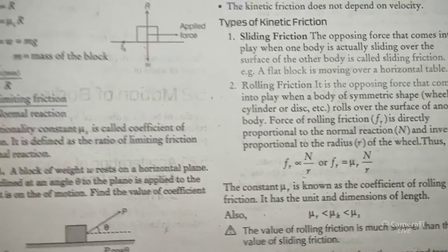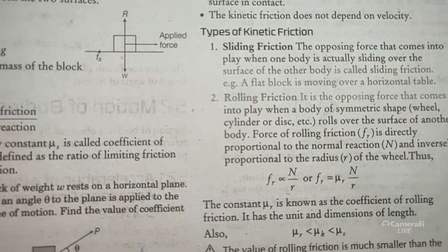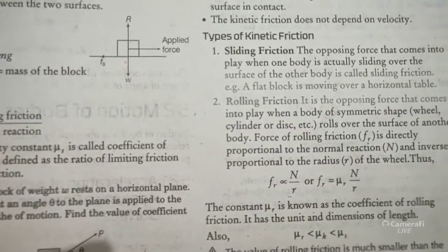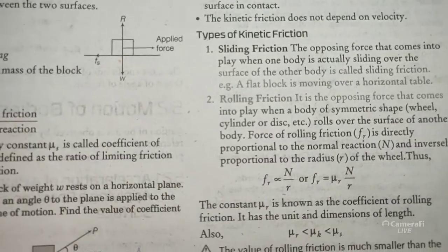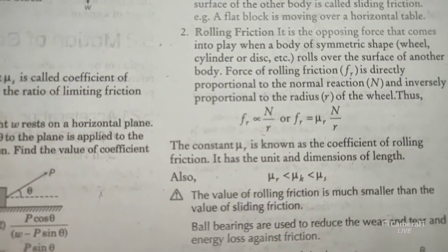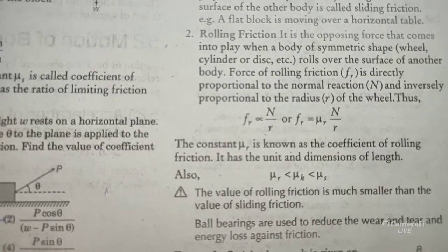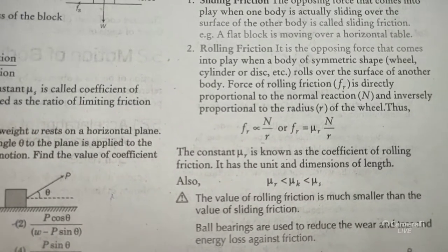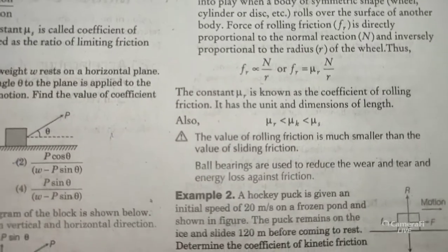Kinetic friction includes sliding friction — when a body slides down — and rolling friction, which comes into play when a body of symmetric shape, like a wheel, rolls over the surface of another body. That is called rolling friction. FR is directly proportional to N/R. The order is: μR (rolling) is least, μk (kinetic) is more, and μs (static) is the most.